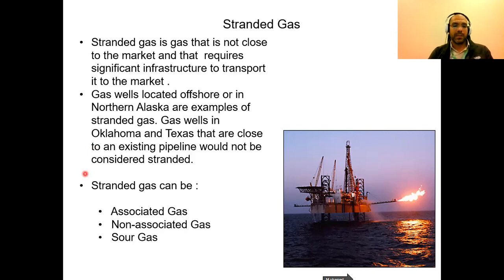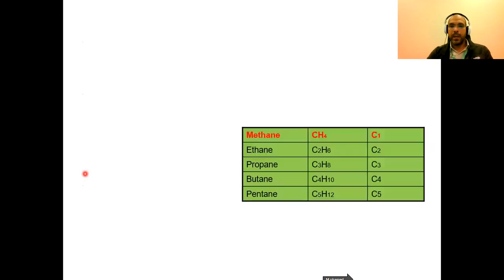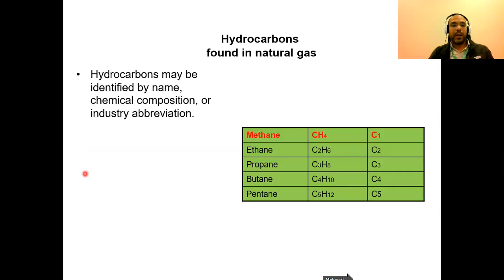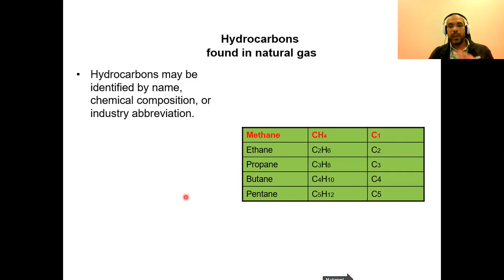What hydrocarbons are found in natural gas? Hydrocarbons may be identified by name, chemical composition, or industry abbreviation — methane, ethane, propane, et cetera. If the composition is more than 90% CH4, we call it natural gas. There is no sharp separation between the different hydrocarbons, so in natural gas you will find traces of C2, C3, C4, et cetera. This table shows these components and the shorthand used for each.